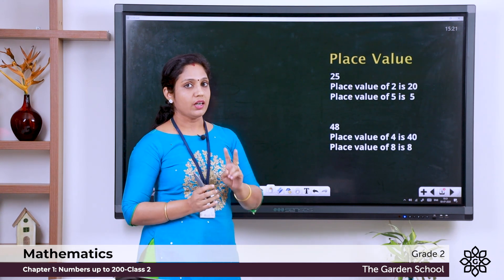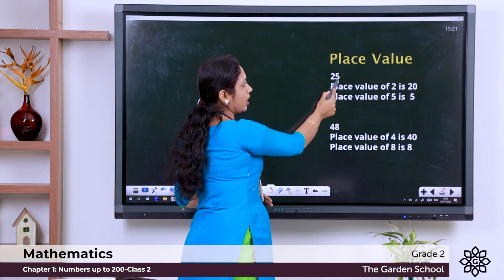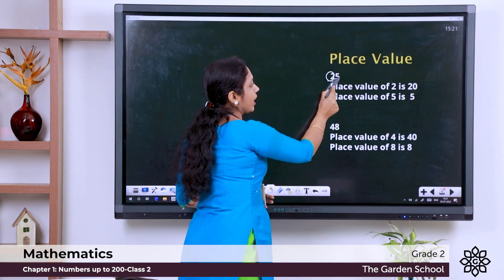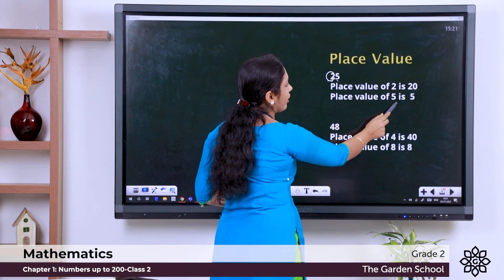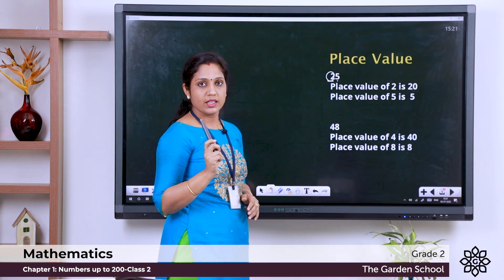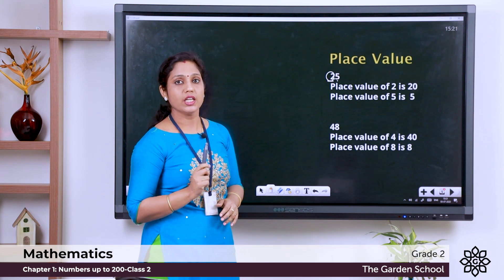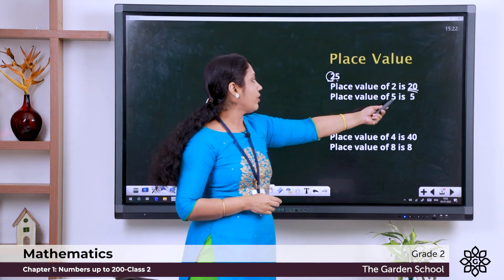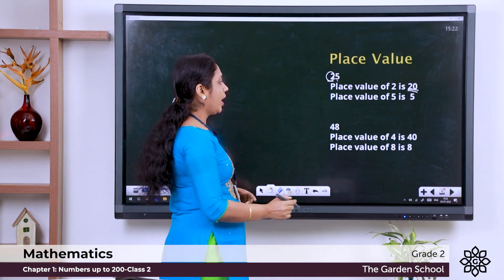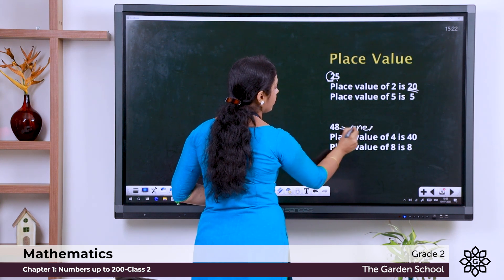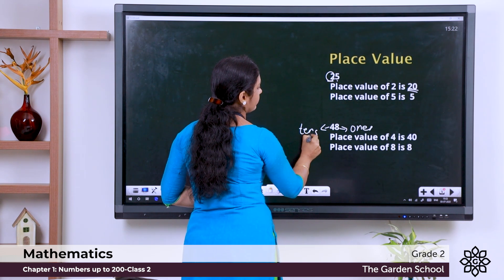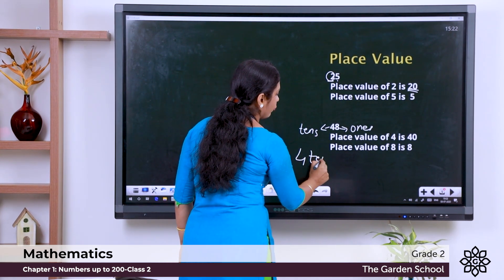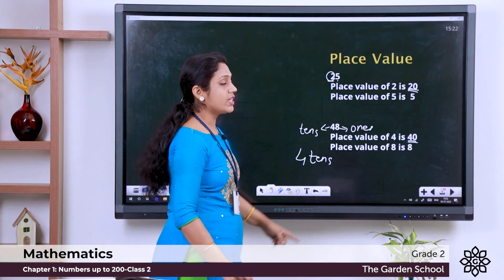The number 25: 5 comes under the ones place, 2 comes under the tens place. So the place value of 2 is 20 because 2 is in the tens position, and we write it as 20. The place value of 5, which comes in the ones position, is 5. Next, 48: 8 comes in the ones position and 4 comes in the tens position. Place value of 4 is 40, because 4 tens makes 40, and 8 ones makes 8.